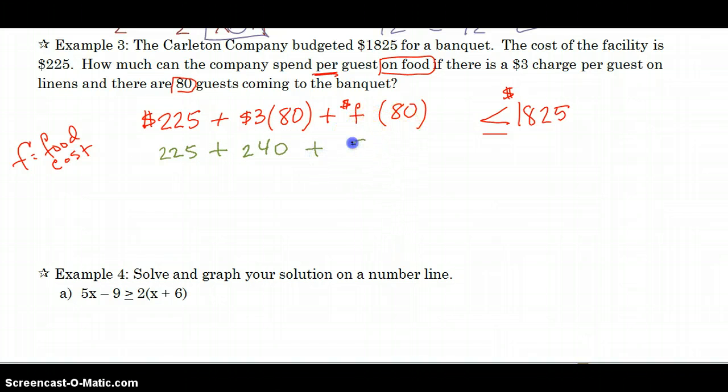And I'm going to rewrite this as 80F. That way it looks like the equations that we're used to looking at. So 225 plus 240 gives us 465 plus 80F. I kept forgetting to write less than or equal to 1825.